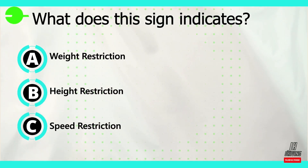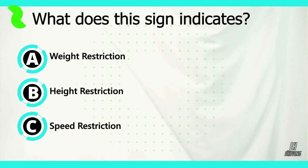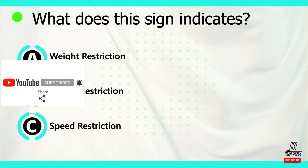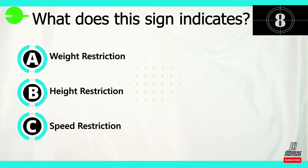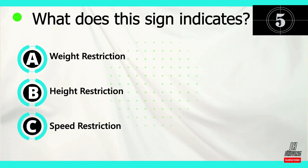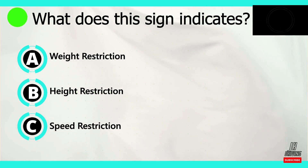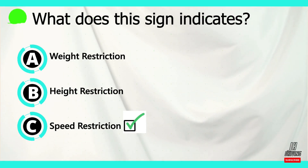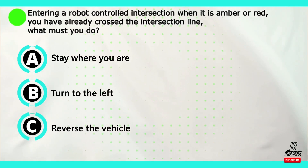Question number one: what does this sign indicate? Option A: weight restriction. Option B: height restriction. Option C: speed restriction. The correct answer is C — this sign indicates speed restriction.